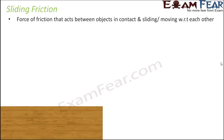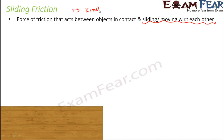Sliding friction is the force of friction that acts between objects in contact and sliding or moving with respect to each other. As the name suggests, when the objects are sliding, the concept of sliding friction applies. This sliding friction is also known as kinetic friction, since the word kinetic is used for anything which is in motion.